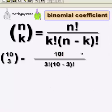So you get ten factorial divided by three factorial times the difference, ten minus three factorial. Do a little bit of the math.